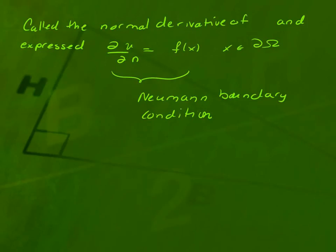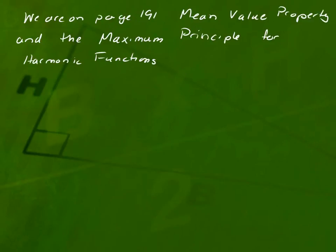This is called the Neumann boundary condition. A lot of times you see that set to zero. But zero is not the Neumann boundary condition, it's just set to a function. Where are we in the book right now? We're on page 191, talking about mean value properties and the maximum principles for harmonic functions.